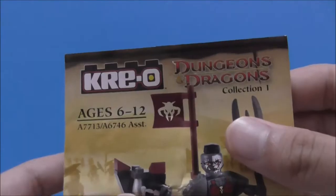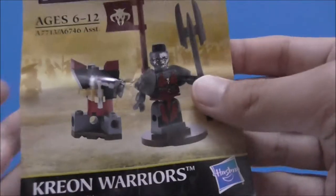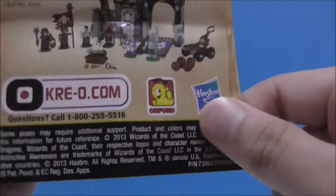This is the instruction manual here. You can see this thing folds out like this, so it's pretty long. The back shows you all the other sets. Here you got the parts list, and that's it for the instructions.